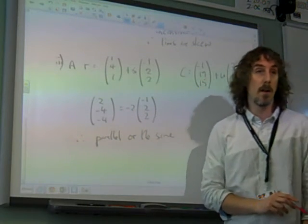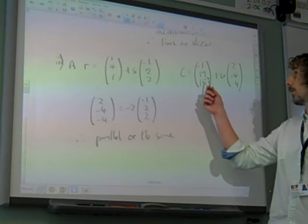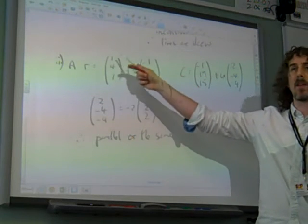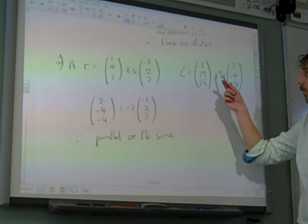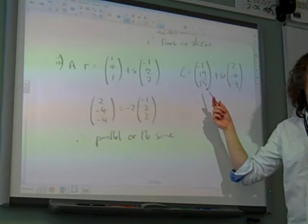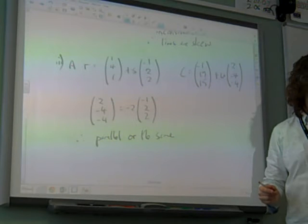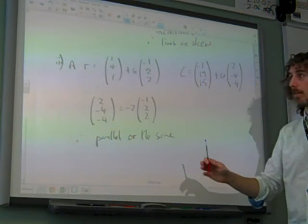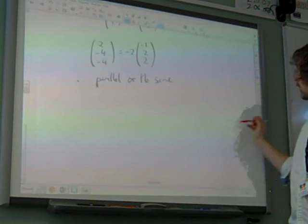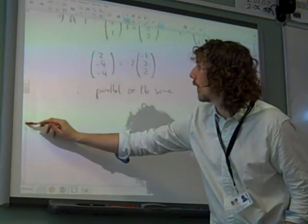Now, parallel or the same. All we have to do is to show that, for example, the point 1, 4, 1 is on that line. Is the point 1, 4, 1 on that line? If it is, then through the same line. We go through the same point. If it's not, they're parallel. So let's just do a really quick check on that.